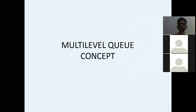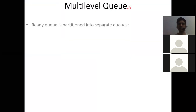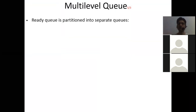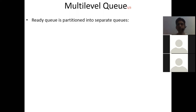In multi-level queue, what we are going to do is bifurcate our ready queue. So let's see how it works. The ready queue is partitioned into separate queues. We want to implement our CPU scheduling algorithm on different queues in different manners.